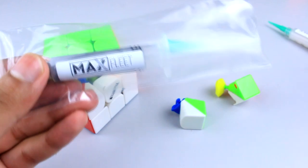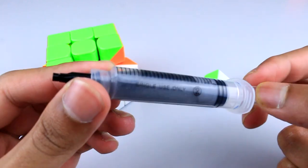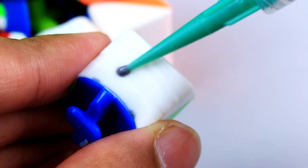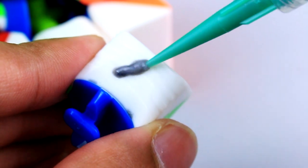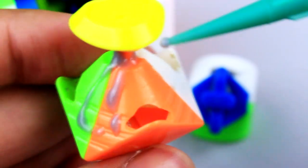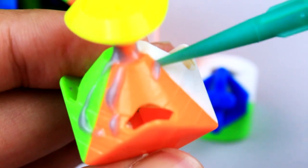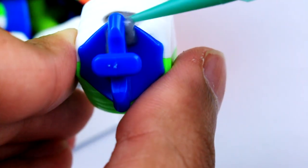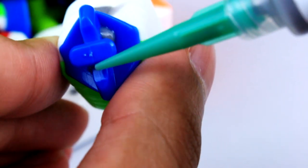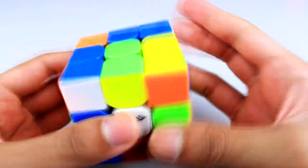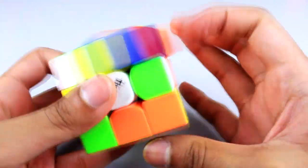Next, getting the Max Fleet. As you can see, it has a grayish dull appearance just like the Lubicle Black. We will apply Max Fleet to the edges and corners. We'll again put a small amount of lube onto the pieces to avoid over-lubing. Basically, all the contact areas of the pieces should be lubed. Once that's done, let's break it into this cube so that it spreads evenly throughout.